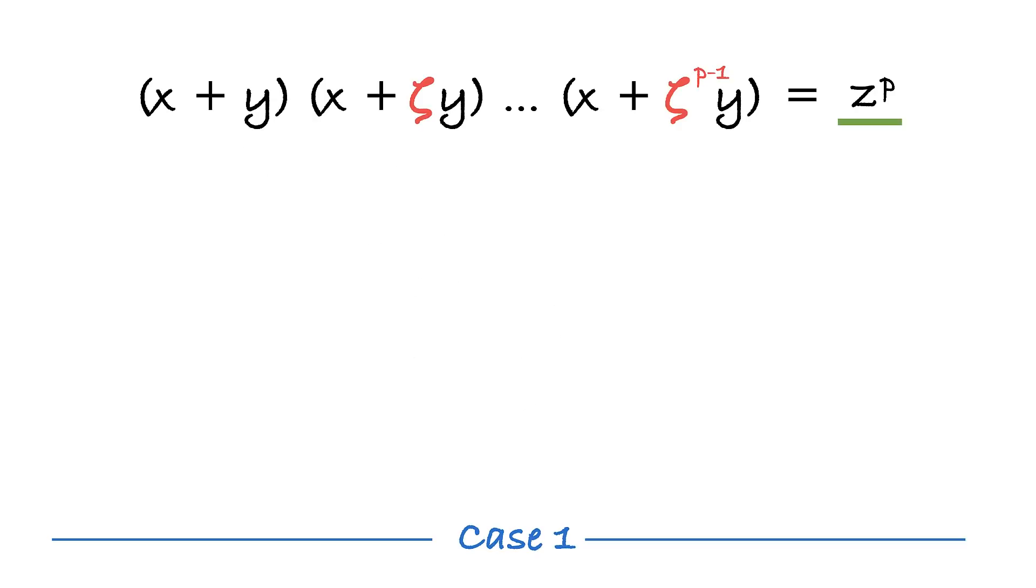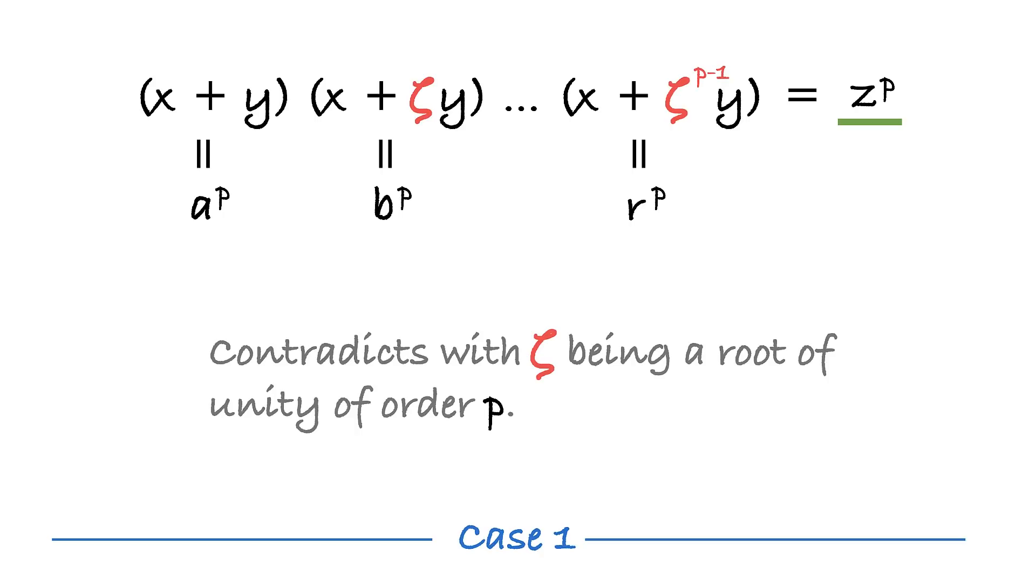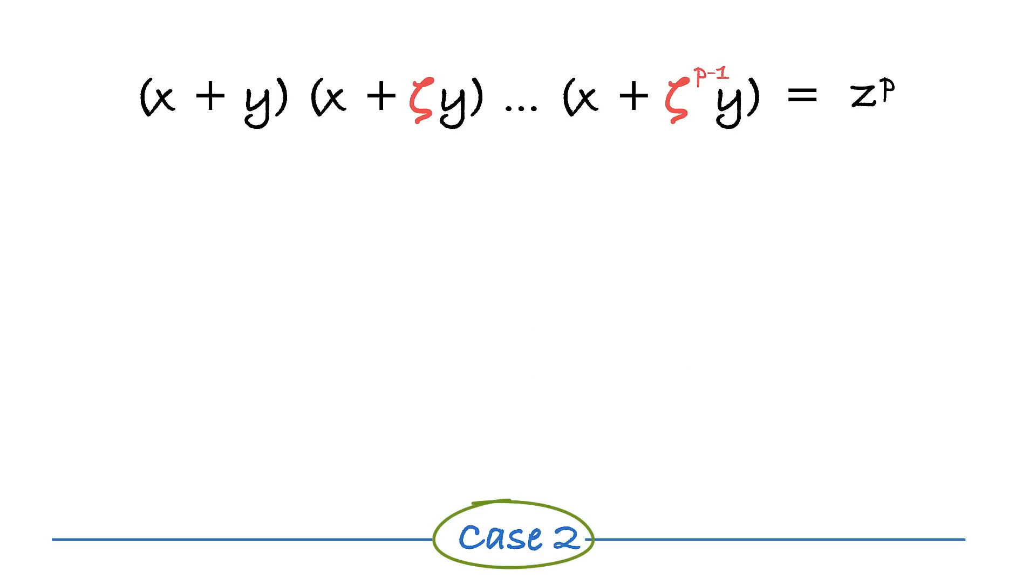It turns out that in case one, any two factors on the left have no common divisors, or as they say, are pairwise relatively prime. Look at the right side of the equation. The right side is a p power of a number. But because the factors on the left have no common divisors, one would naturally expect that each of the factors itself is a p power of some number. But that, by the means of quite a laborious chain of arithmetical transformations in Z[zeta], happens to contradict with the fact that zeta is a root of unity.